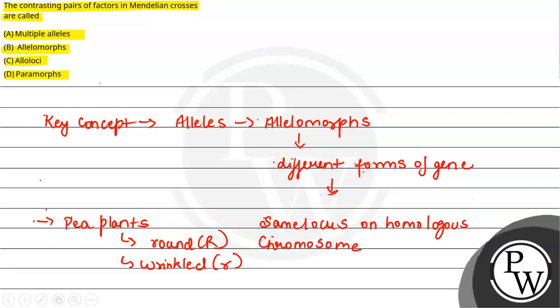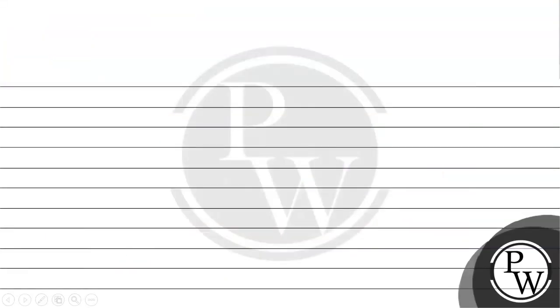These are different alleles. Option A, multiple alleles: multiple alleles occur when we have one gene and different alleles present, so we have two or more alleles present.